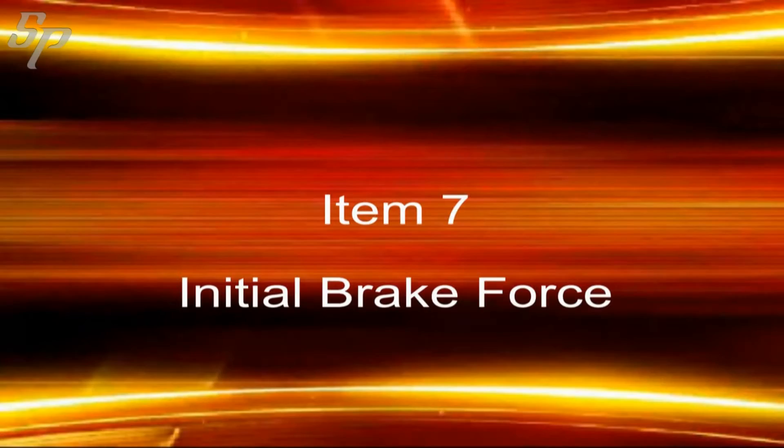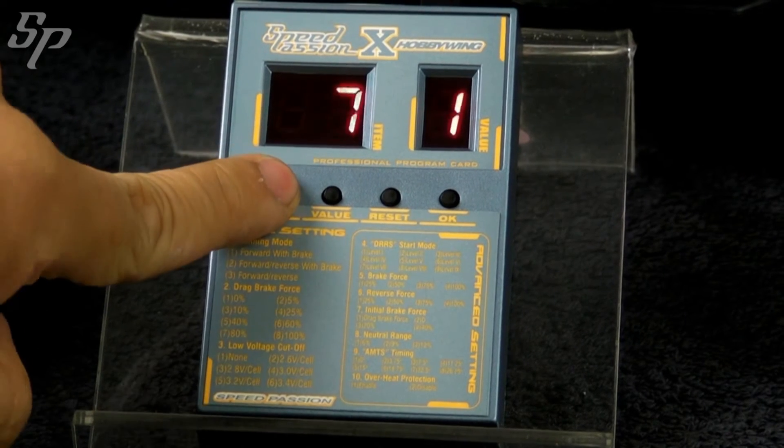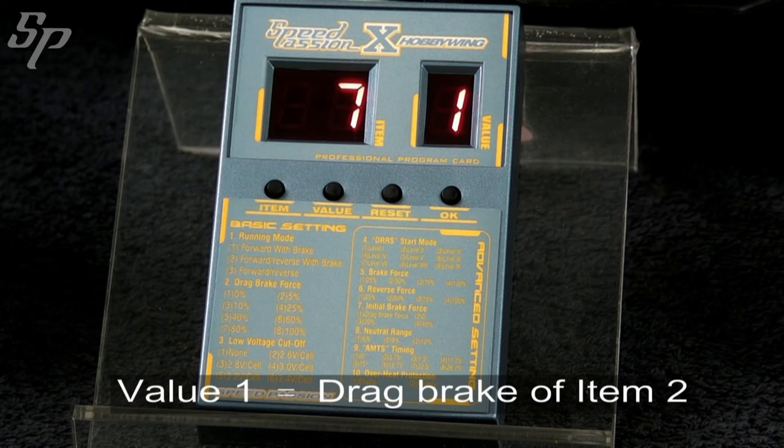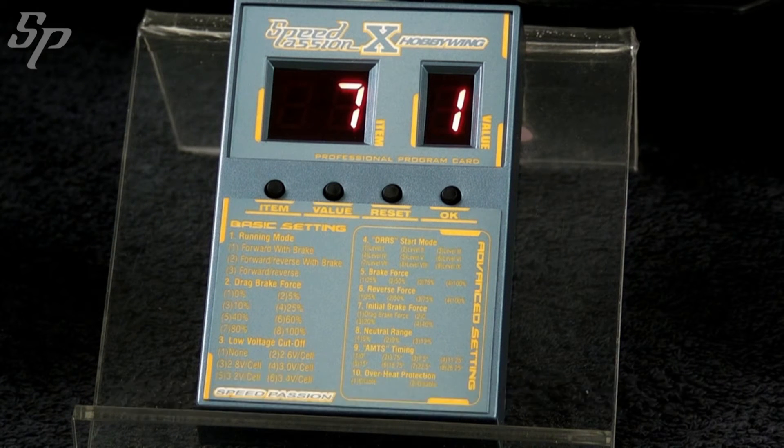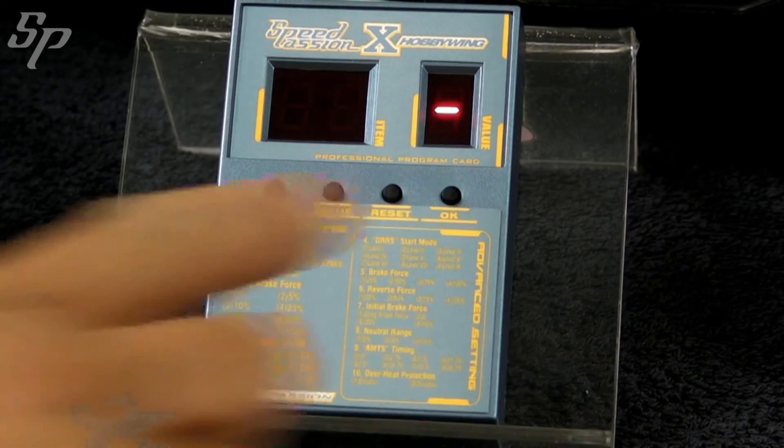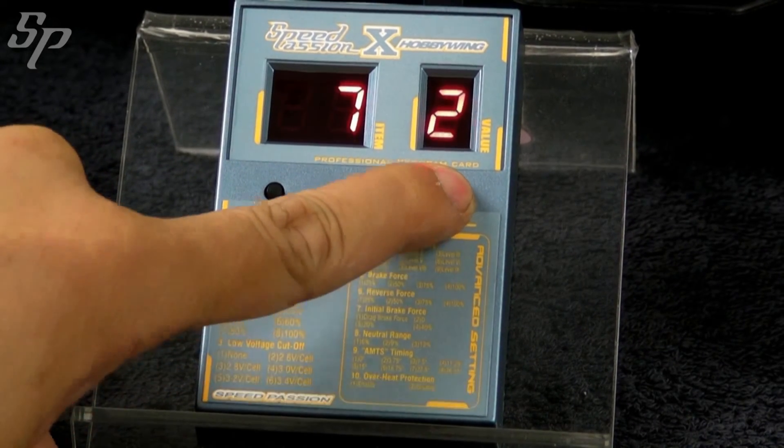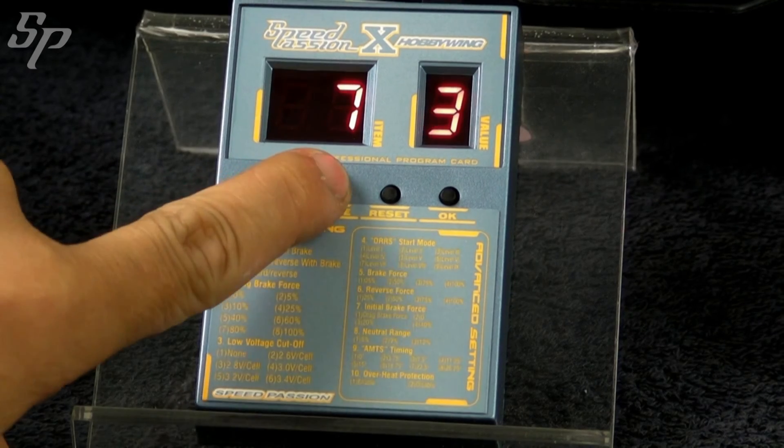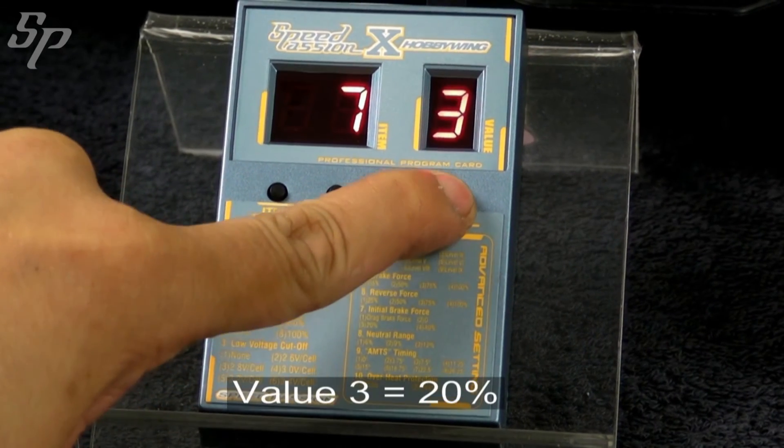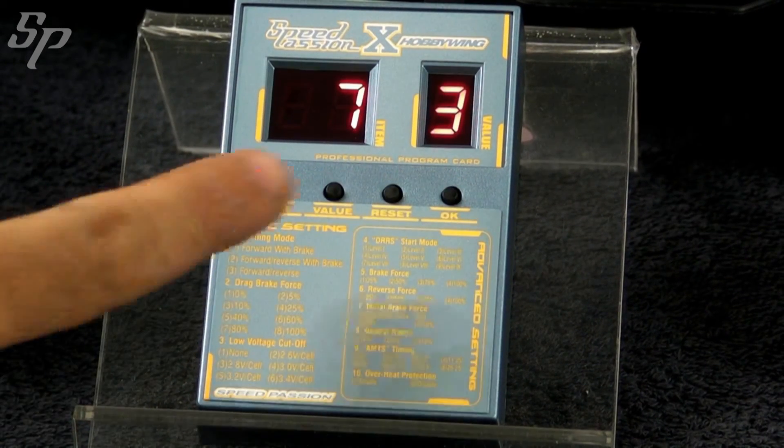Item 6 is about reverse force. The higher the value, the larger the reverse force to be in effect. With a value of 1, the value will be set to be identical to that of the drag brake. A value of 2 means 0. The other values are 20 and 40%.